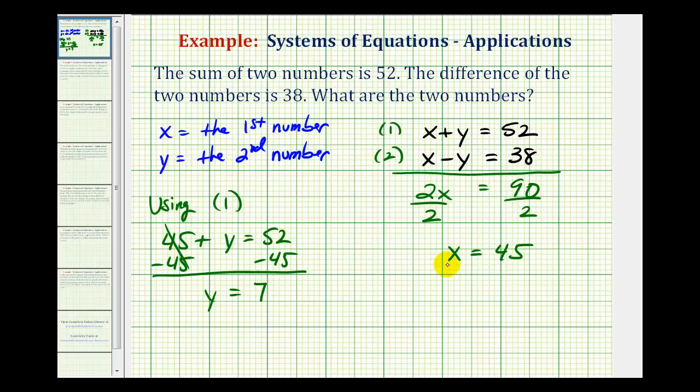And now we have our two numbers. The first number is forty-five and the second number is seven because their sum is fifty-two and their difference is thirty-eight.